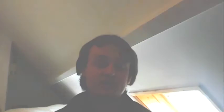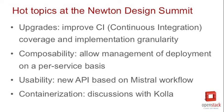We're about a month after the design summit that happened in Austin. Can you please share a little bit about what were the hot topics your team discussed and the potential outcomes? We had a really productive summit. Some of the major topics we discussed were around upgrades. In the previous cycle through Liberty and Mitaka, we got to the point where we had functional upgrade support for version-to-version upgrades, and we were looking for ways to improve CI coverage and break down the implementation so it was easier to specify per-service upgrade behavior.